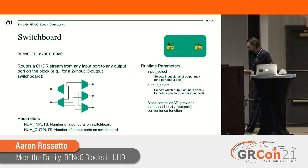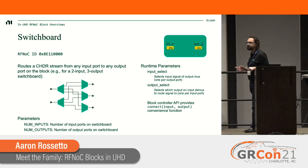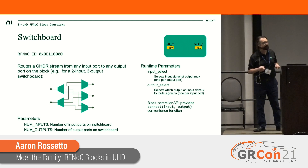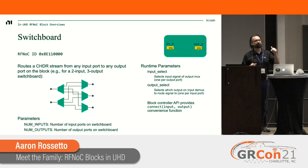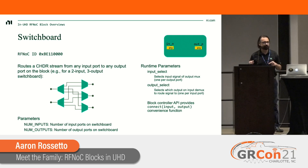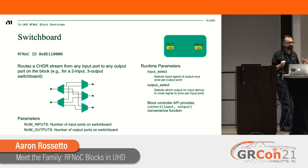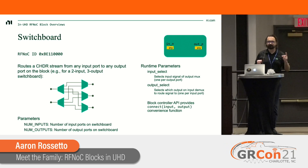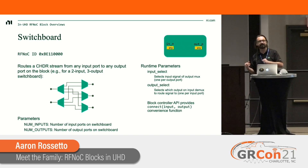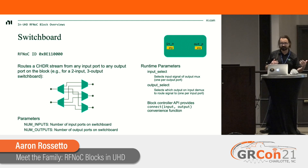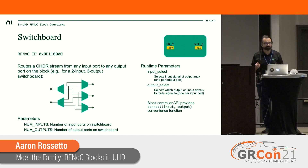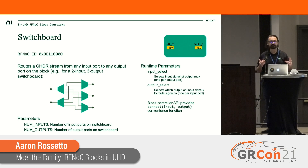The switchboard block was contributed by summer intern Jesse Zhang. It allows you to route any input port to any output port. The block controller has a single connect function — you give it the input number and the output number and it makes the connection. If you use the properties instead, you have to set the input select and output select separately, which takes a bit more effort.